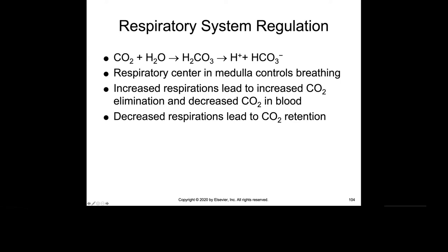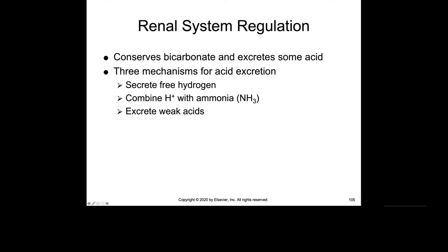Respiratory regulation: the respiratory center in the medulla controls breathing. Increased respirations increase CO2 elimination and decrease CO2 in the blood. Decreased respirations lead to CO2 retention, which can cause an acidotic situation — this occurs mostly in COPD patients. Renal system regulation conserves bicarb and excretes some acid. Three mechanisms for acid excretion are secreting free hydrogen, combining hydrogen with ammonia, or excreting weak acids themselves.